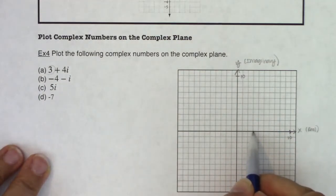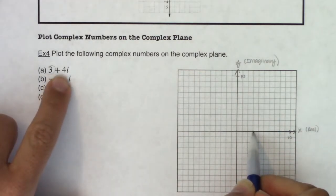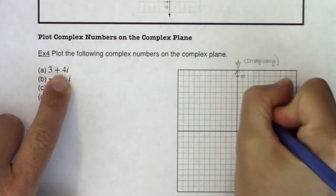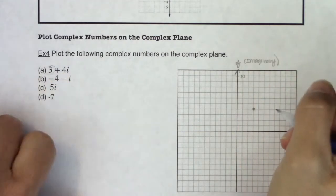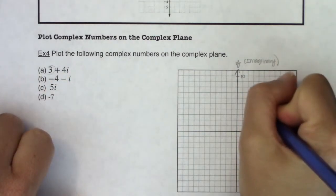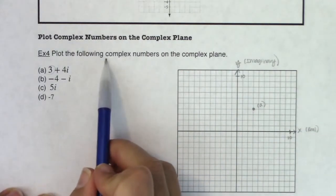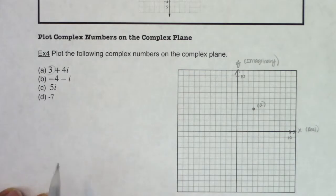So I'm going to move right 1, 2, 3. And the imaginary part of this complex number is 4i. So I'm going to move up 1, 2, 3, 4. That is the complex number 3 plus 4i. So just so we label it, that is the solution to part a. I have plotted that complex number on the complex plane.